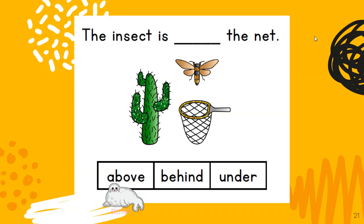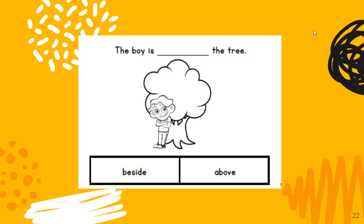You could say that the insect is next to the cactus, right? You could also say the net is under the bug. Let's try this one — the boy is near the tree. Is he beside the tree or above the tree? He is beside the tree. The boy is beside the tree.